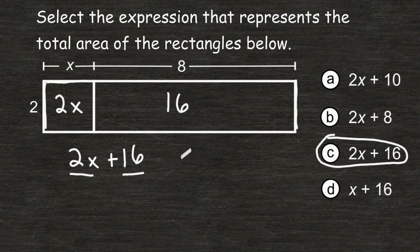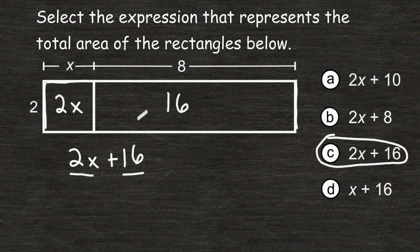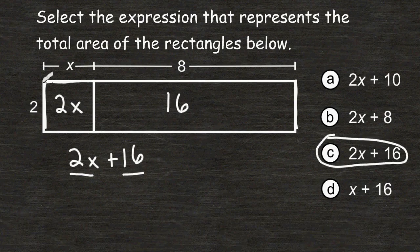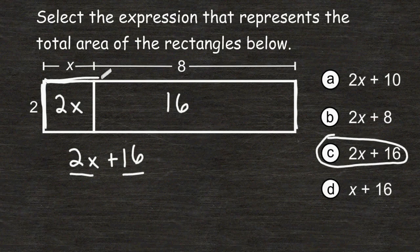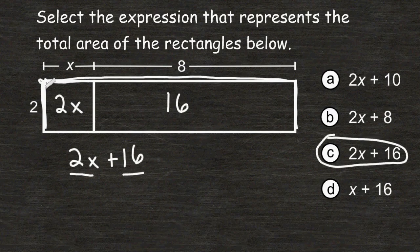Now another way of solving this problem is to look at both rectangles as one entire large rectangle. So we can look at it as having a length of 2, and we can look at it as having a width of x plus 8. So from this point to this point would be x plus 8.